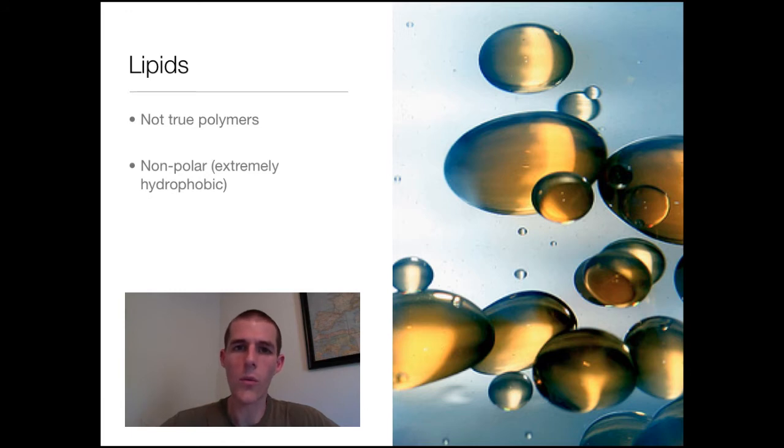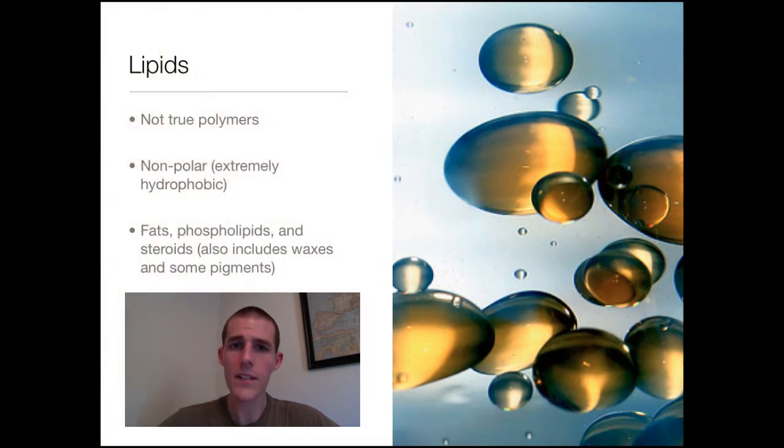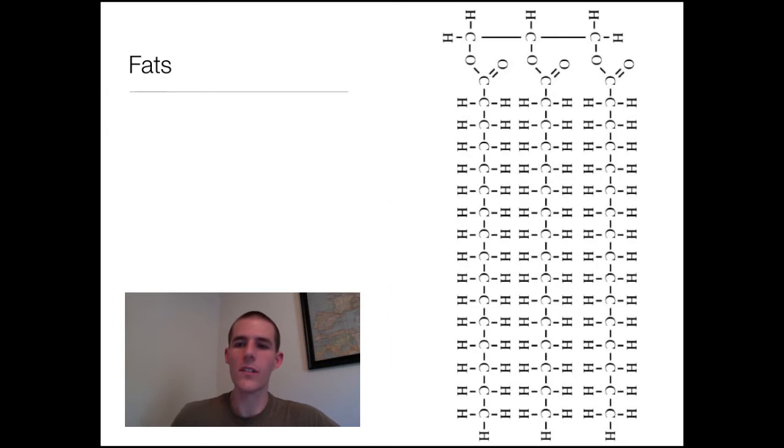If you look at that picture on the right, you've seen oil and water before. When oil is put in water, it separates itself up and completely excludes all water. Oil is a lipid. So that's why they're all grouped together. Some examples, the three we're going to talk about today, are fats, phospholipids, and steroids. But also included are waxes and some pigments.